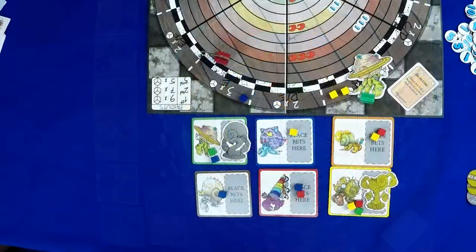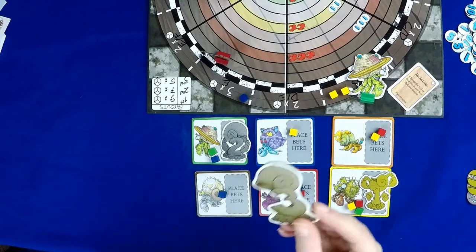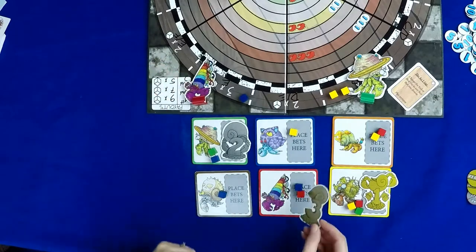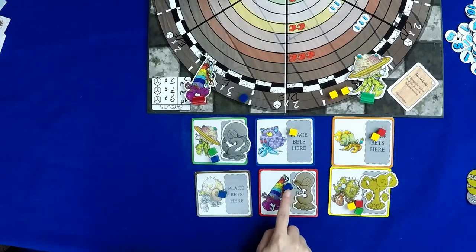The game continues with players taking turns until the first, second, and third place trophies have been awarded. As soon as the third crab crosses the finish line, the game is over. The active player doesn't even get to take any more actions.